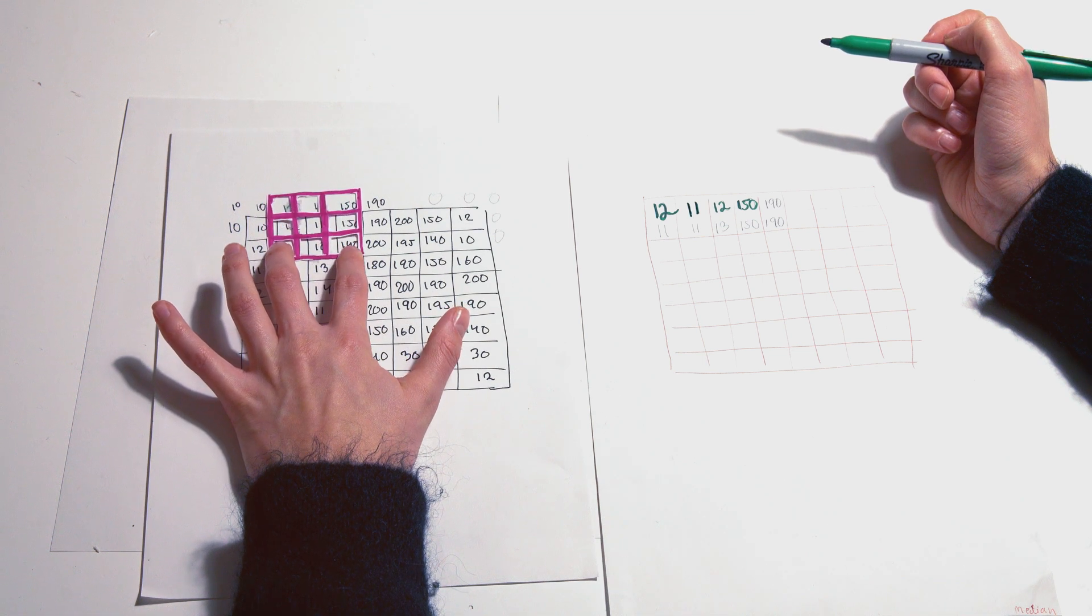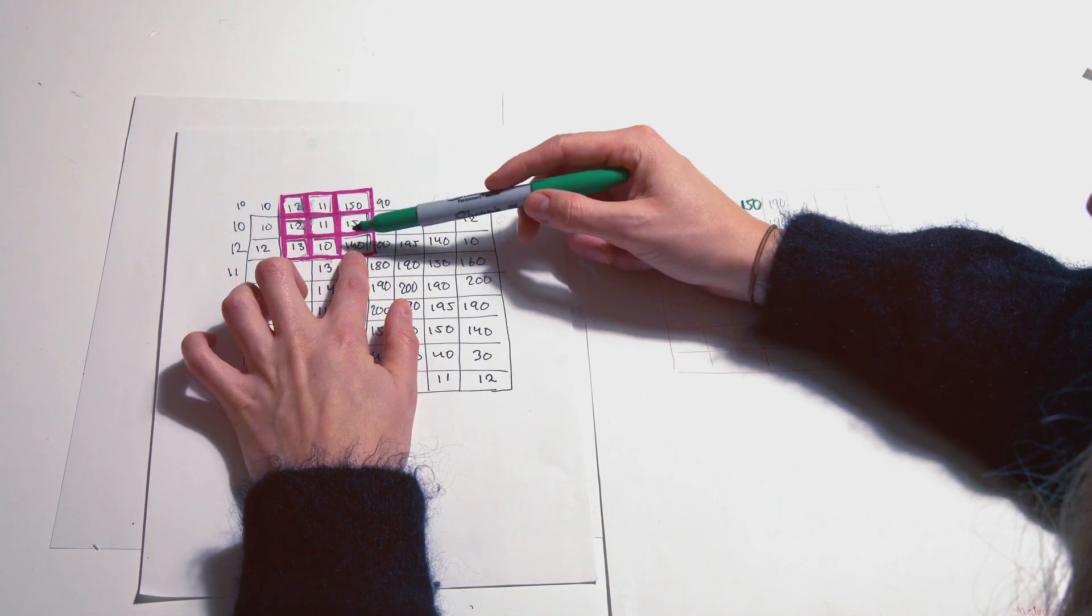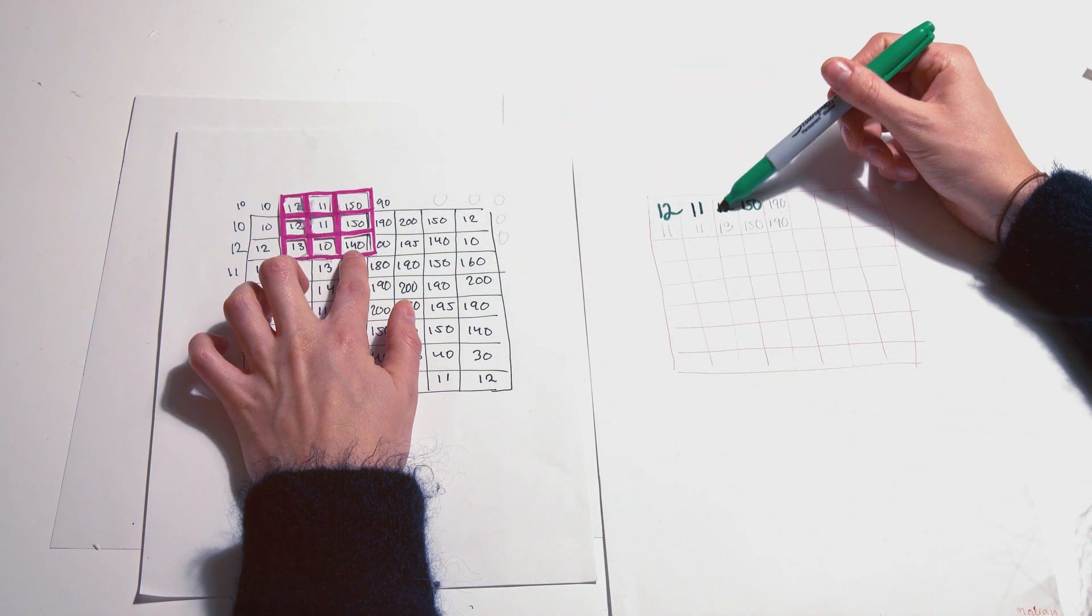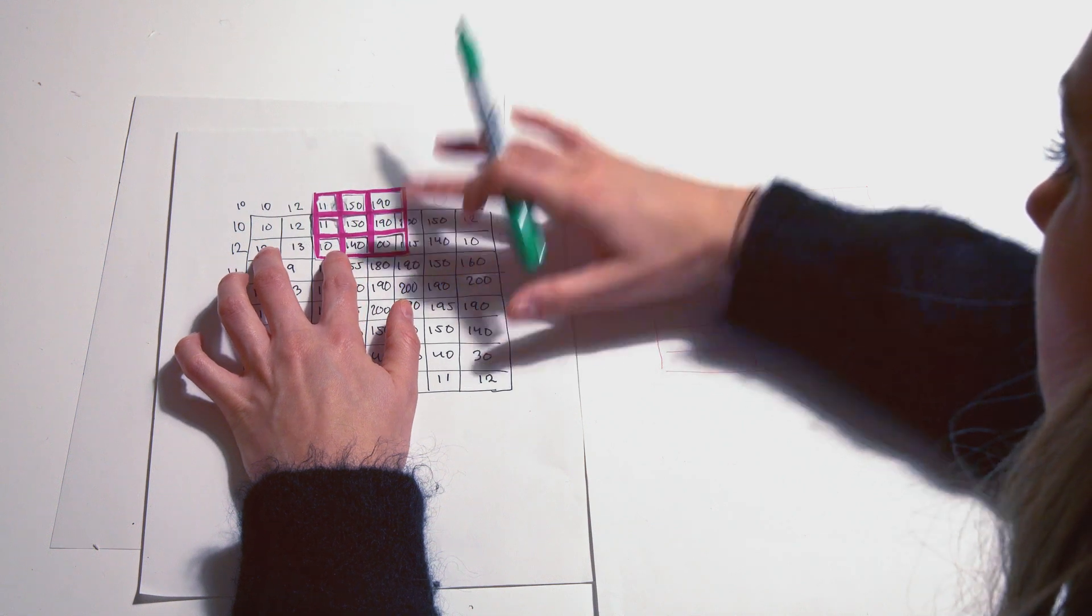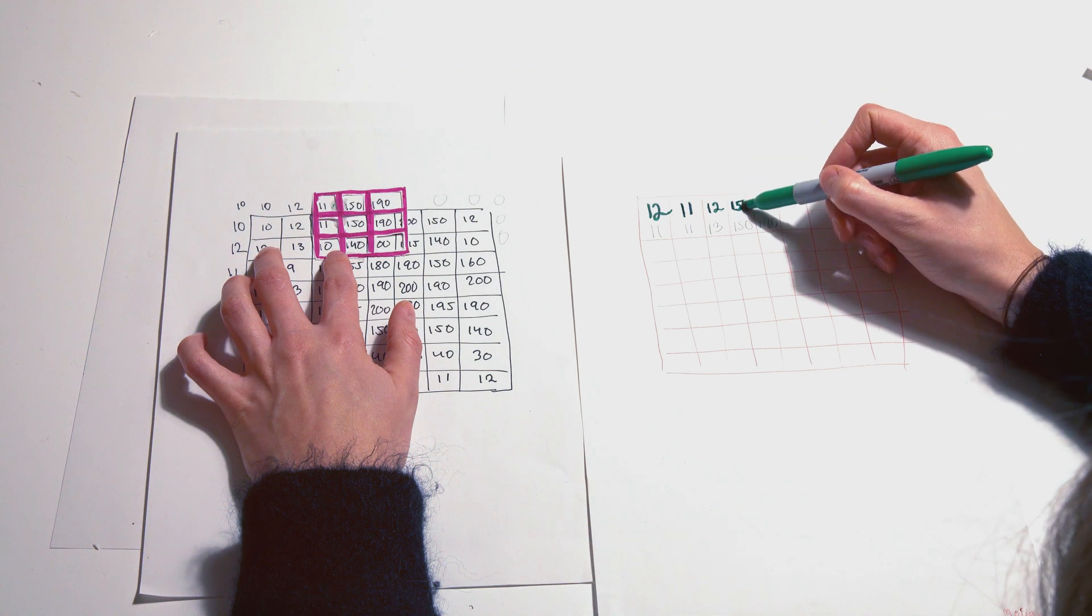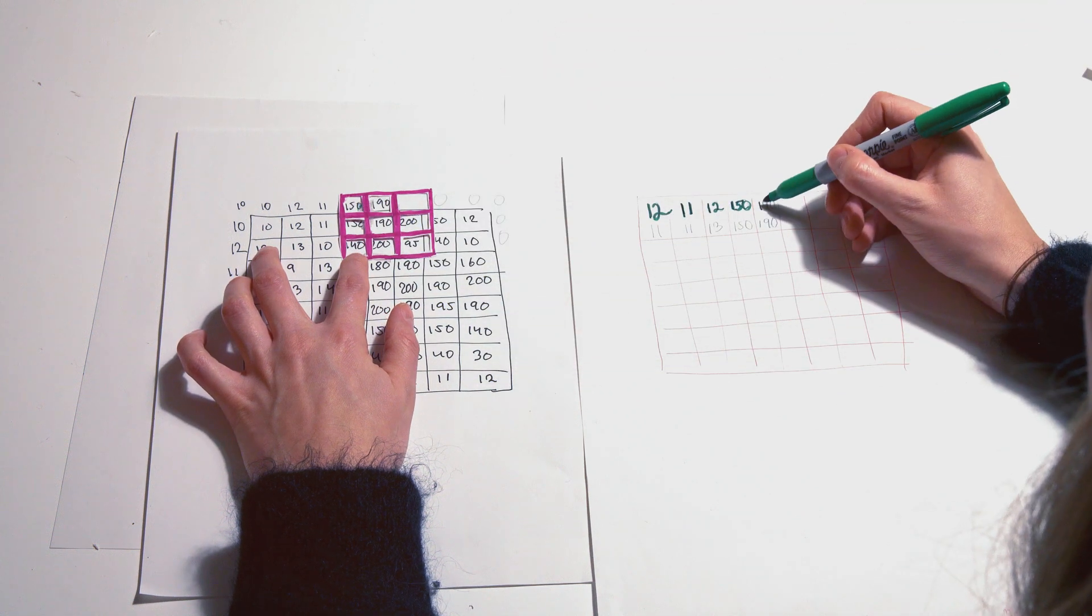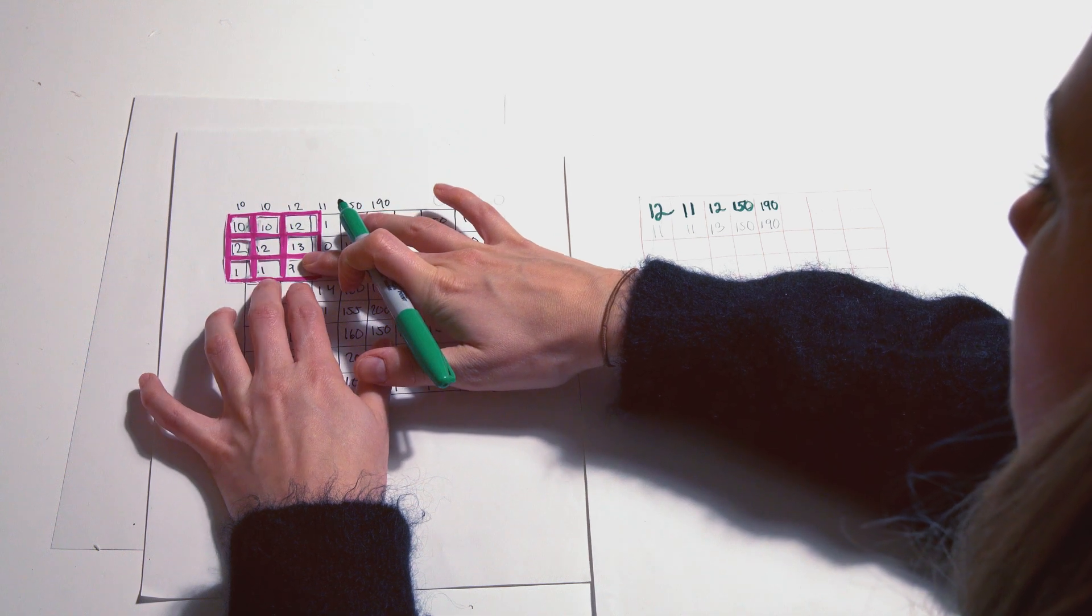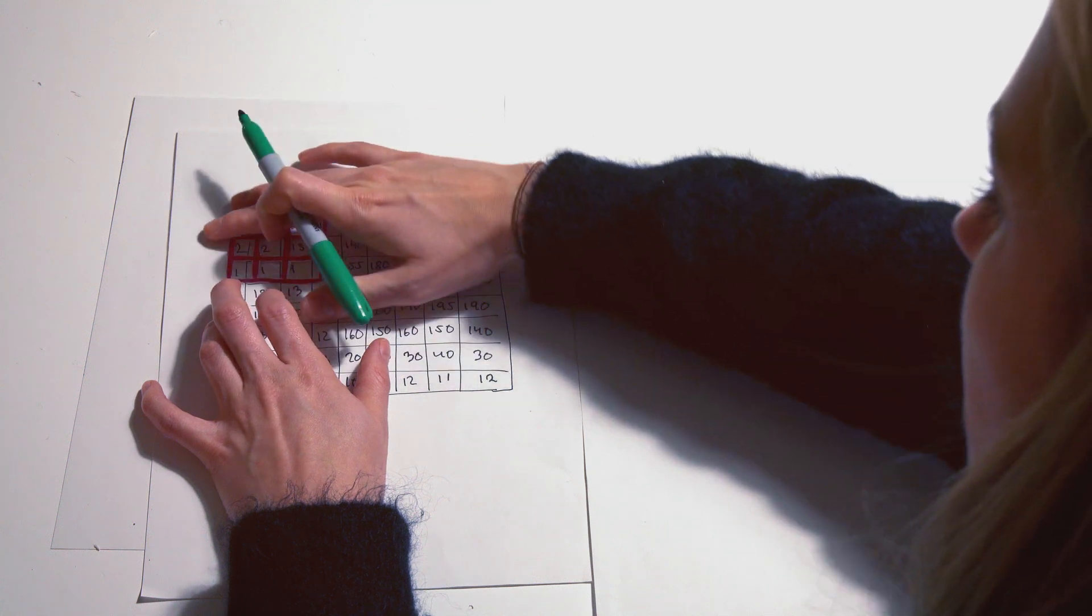We add number 11 there, then we swipe it. We will see here 150, 140, 11, 11, 10, 13, 12, 12. What's the median value here? It is number 12. Then we go one step more. Now the median value is 150. If we put it here, we're going to get 190 as the median value. Then we do the same here. I also just did two rows, one, two, three, four, fifth column. But this is what you do on the whole picture.